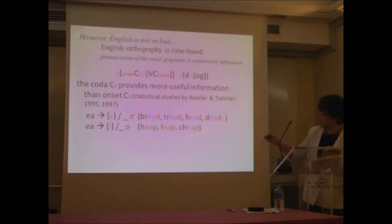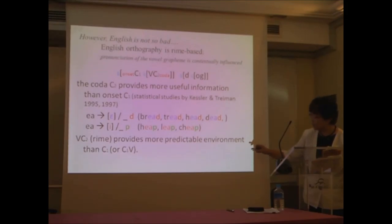So this is the example. Digraph spelled EA is always pronounced 'e' if it's followed by a coda consonant D. So all 'dead, bread, tread, read' is all pronounced with 'e.' When it's followed by P, the same EA is pronounced 'ee': 'heap, leap, reap.' So if children are sensitive to coda consonants, then the vowel grapheme can be predictable pretty well. So we see a rhyme provides more predictable environment than the onset consonant.